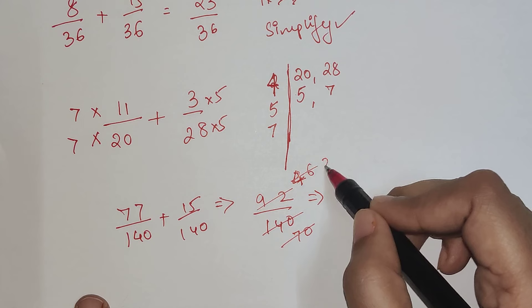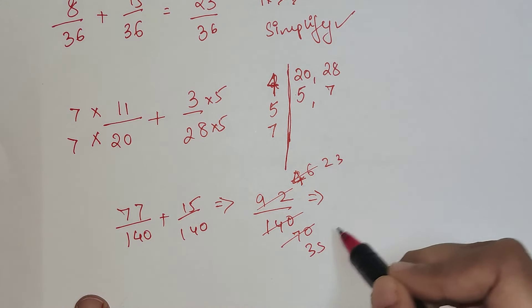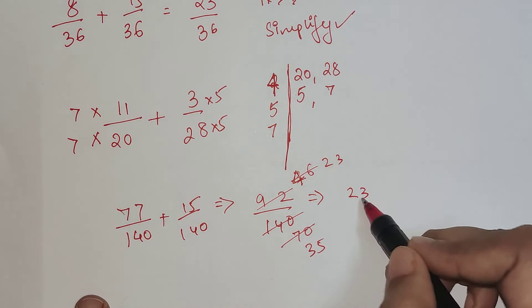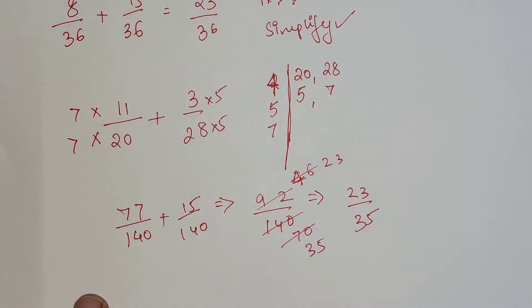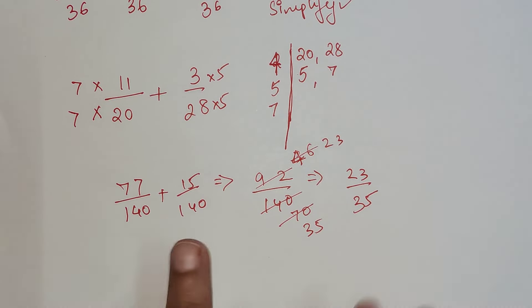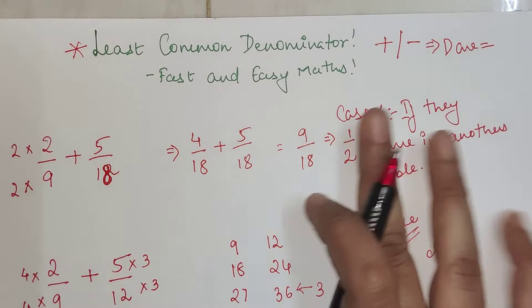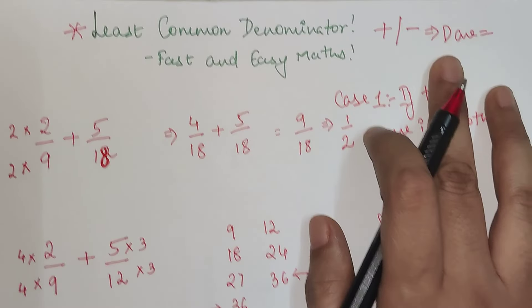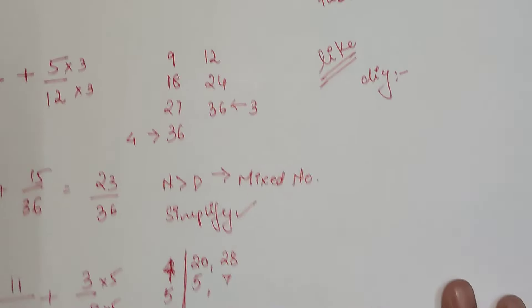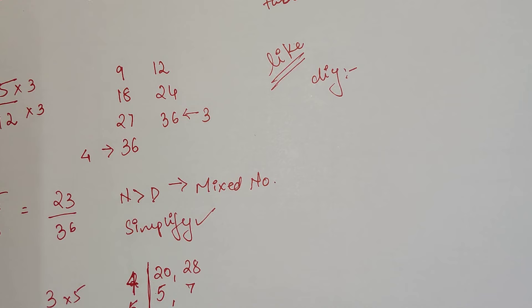So my final answer is 23 upon 35. Now see, like I said, this entire thing will work for positive as well as negative fractions. So let's try and see one negative fraction as well.